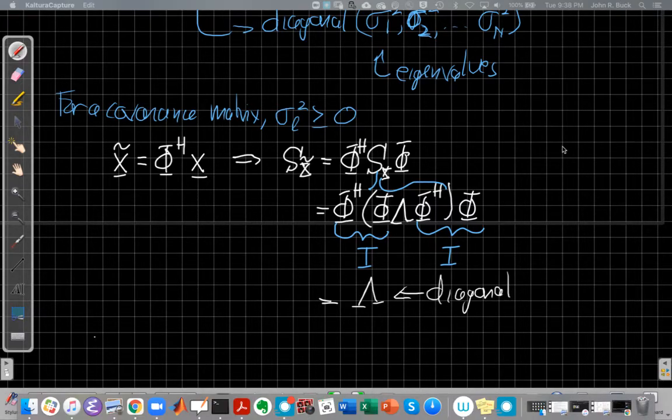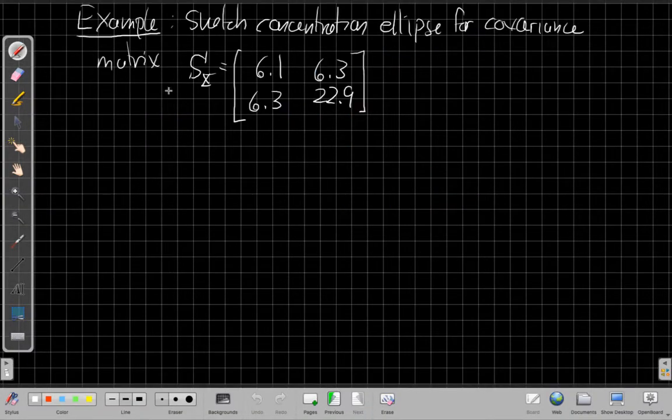So let's see what happens if I work through an example here. We're going to sketch the concentration ellipse for a covariance matrix where S is equal to, a 2D simple case we can sketch just to get a feeling for what's going on, 6.1, 6.3, 6.3, and 22.9. The first thing we want are the eigenvalues and eigenvectors. We can use MATLAB to do that. So let's pause for a moment, go do that in MATLAB and check your answers against mine.